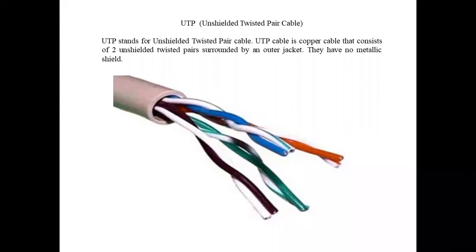The two twisted wires are responsible for sending signals from one end to the other and are covered by a single outer material. If a metallic shield is present on the outside, it is called shielded. In our experiment here, we have the unshielded type.